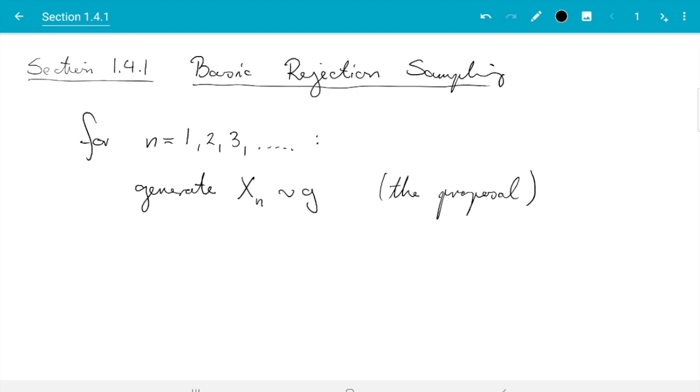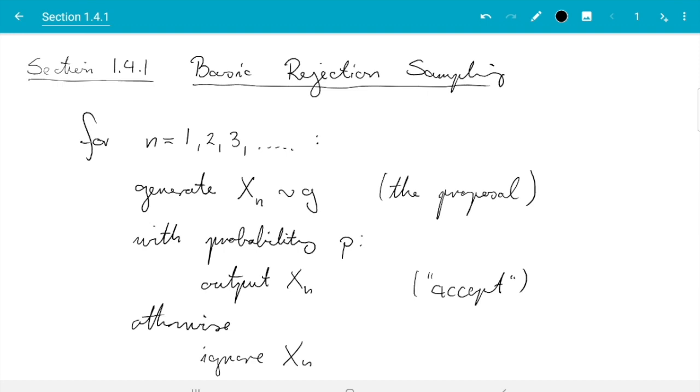And then we randomly decide whether we accept or reject the sample. That's what makes it rejection sampling. So with probability p, we output the sample. That is what's technically called accepting it. And otherwise I write ignore xn. So we just drop it. We don't do anything with it. And that's called reject xn.